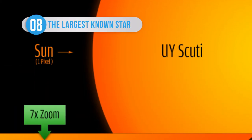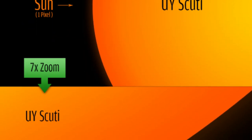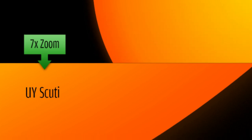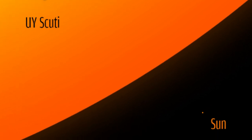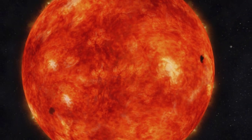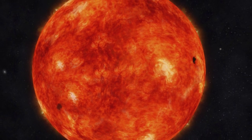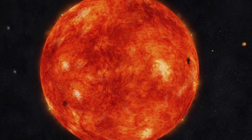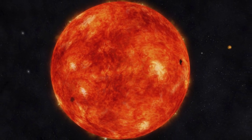UY Scuti is the biggest star ever discovered. Its nearest rival is more than 1,650 times the radius of the sun, but UY Scuti measures in at 1,708 times the radius of the sun. To put that into some perspective, if you imagine the Earth as being the size of a basketball, UY Scuti would be around 125,000 feet tall, the same height as Felix Baumgartner's freefall from the edge of space.